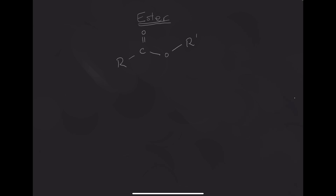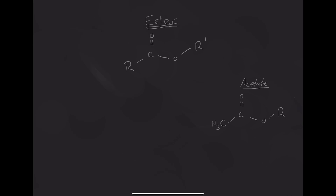Looking at this, you may notice that this ester is actually very similar to the acetate we drew in the acetate video. For an acetate, we have a very similar structure - the only difference is that one R group is replaced by a line, or if we draw it out fully, what that represents is a CH3. So all an acetate really is, is a specific type of ester where one of the R groups - the one right next to the C double bond O - is simply a CH3, a carbon with three hydrogens.